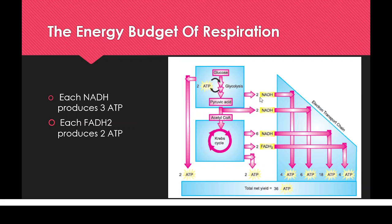During glycolysis, 2 NADH molecules are also formed, which will enter the electron transport chain. Since 1 NADH molecule can produce 3 ATPs, 2 NADH would generate 6 ATPs. However, because glycolysis occurs in the cytoplasm and these NADH molecules must be transported through the mitochondrial membrane, 2 ATPs are consumed in transport. So the electron transport chain synthesizes only 4 ATPs from these 2 NADH.